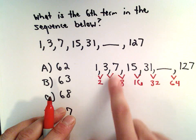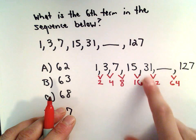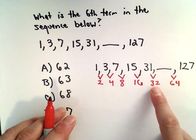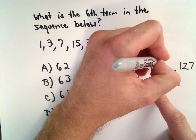So, 1 plus 2 is 3. 3 plus 4 is 7. 7 plus 8 is 15. Again, that's the difference. So, 31 plus 32, that gives me 63.